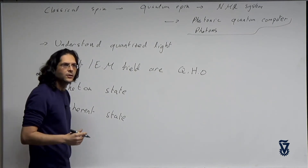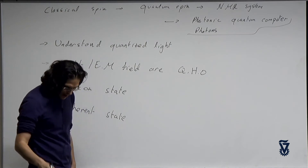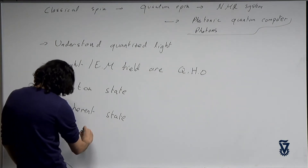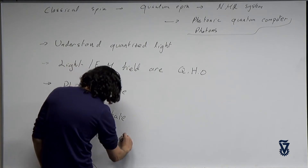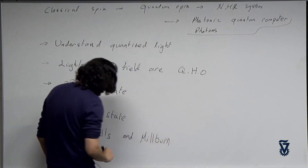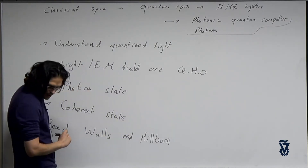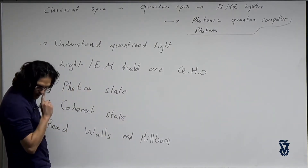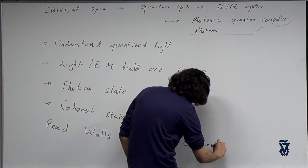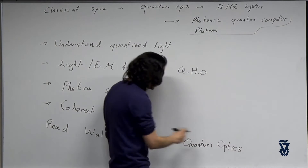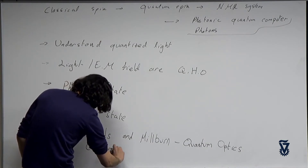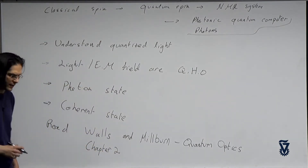A very good reference to quantum optics and quantizing light is the book by Walls and Milburn — please open and read it. It might be called 'Quantum Optics' or 'Introduction to Quantum Optics.' The chapter you want to read is Chapter 2; it has most of the relevant things to what we're going to do.